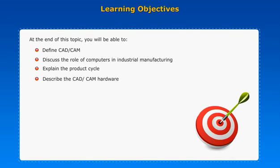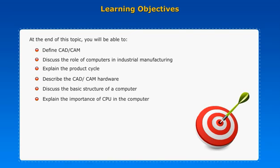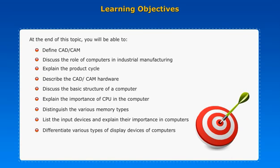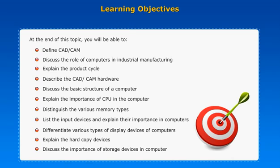Describe the CAD CAM hardware. Discuss the basic structure of a computer. Explain the importance of CPU in the computer. Distinguish the various memory types. List the input devices and explain their importance in computers. Differentiate various types of display devices of computers. Explain about the hard copy devices, and discuss the importance of storage devices in a computer.